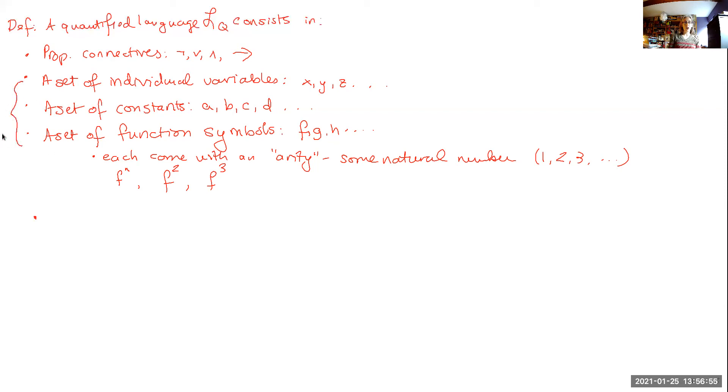So this allows us to talk about objects. Now we want to talk about properties of objects. But as I said, we're just going to call all of these properties relations. So we have a set of relation symbols. And these are going to always be capital letters. So P, Q, R, S, etc. And just like with the functions, each will come with an arity. So we can talk about one-place relations, binary relations, ternary relations, n-ary relations, etc.